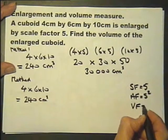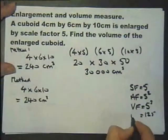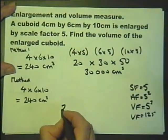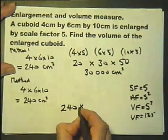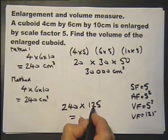Now the volume factor is 5 cubed, 125. So if we take our volume of our object and multiply it by the volume scale factor, we get this answer straight away.